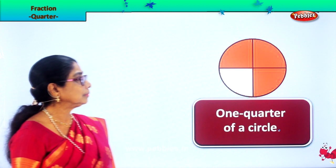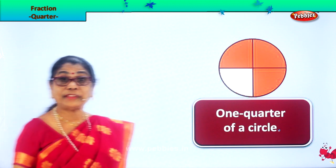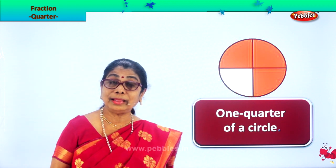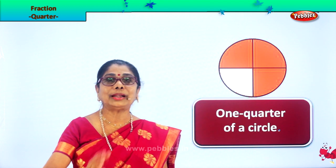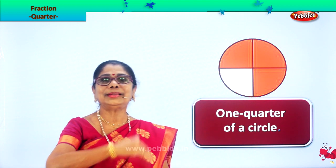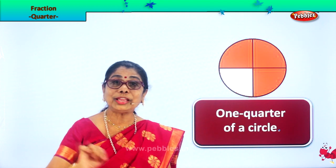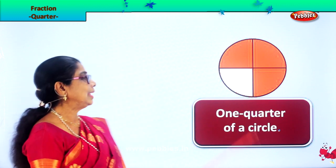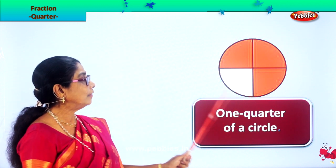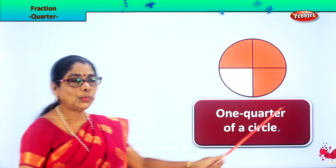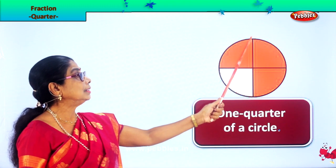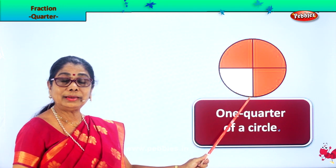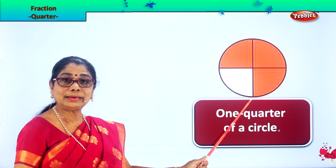Look. Here we have a circle. Supposing you had a circular cake — you will cut it into half, then again into half, and you will get four equal bits. Now here you have a circle. We cut the circle with one line.